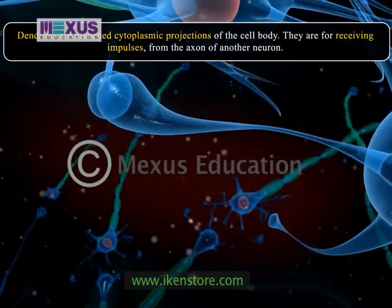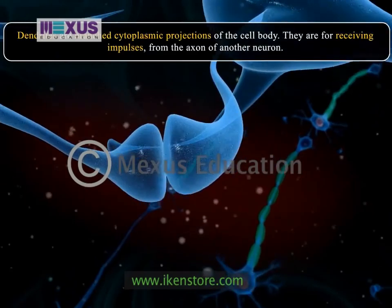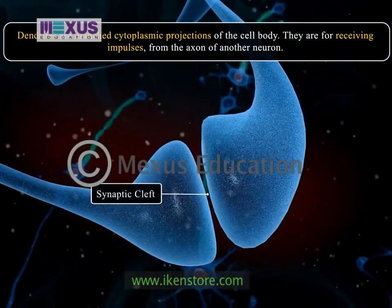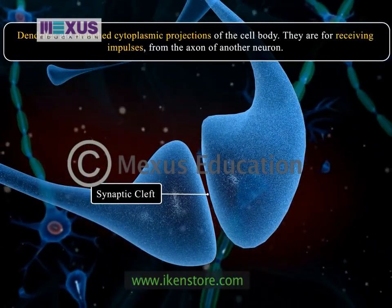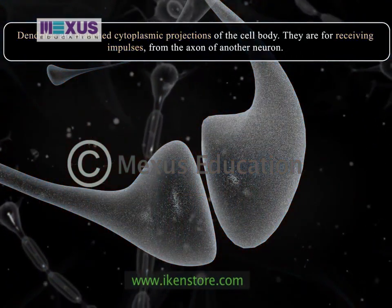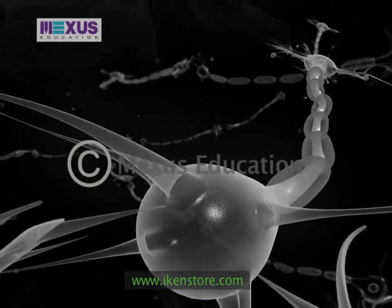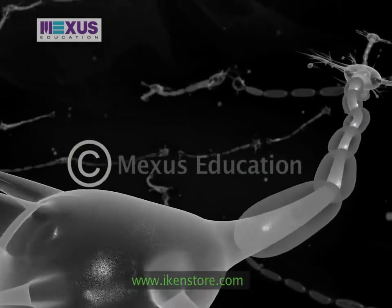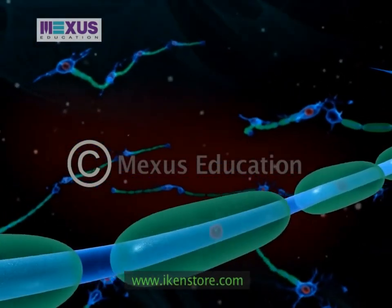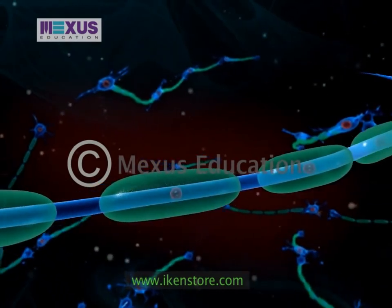Dendrites of one neuron and the axon of another neuron are separated by an extremely narrow space called the synaptic cleft, through which nerve impulses are transmitted. The axon, also called the nerve fiber, is a long process of a neuron cell body and is specialized to carry messages.